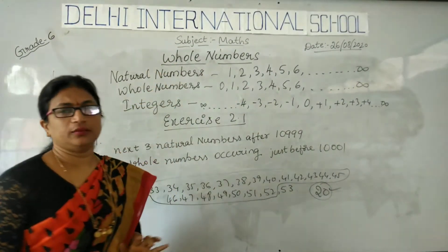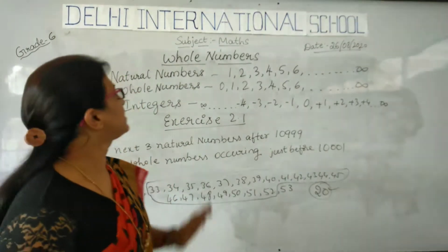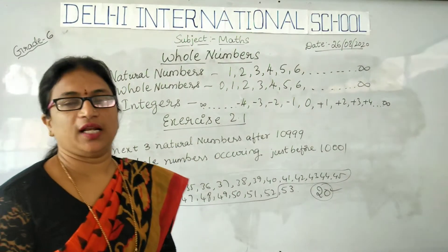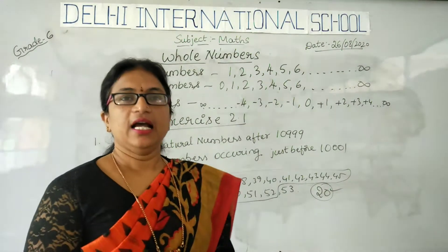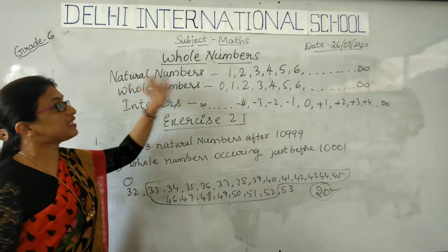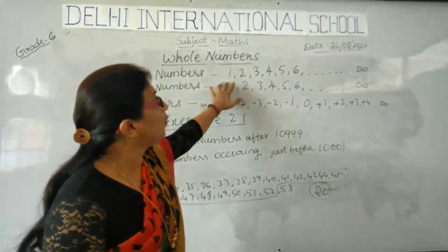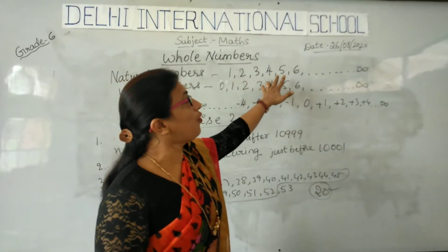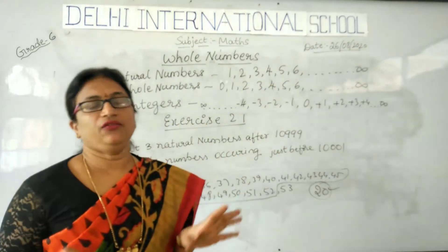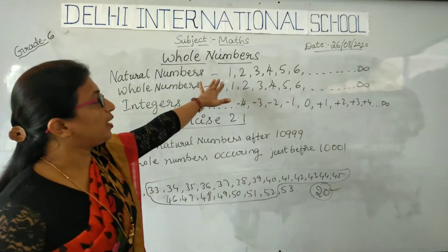Before going into whole numbers, first we will see what are natural numbers. Natural numbers are the numbers that start with 1, 2, 3, 4, 5, 6, up to infinity. These are the natural numbers.